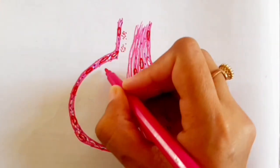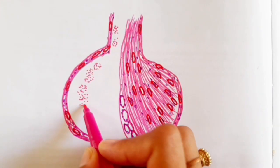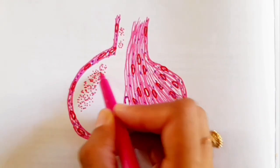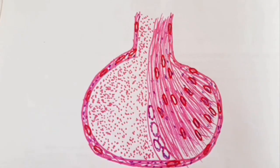Now come to pars tuberalis and pars distalis. Draw the acidophils with pink pencil. You should draw 70% acidophils and 30% basophils. Draw the basophils with purple pencil.